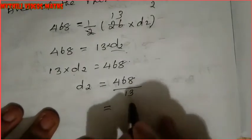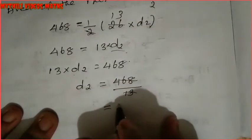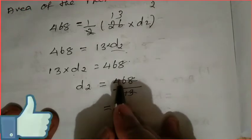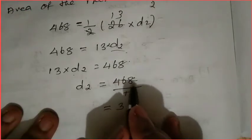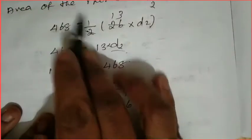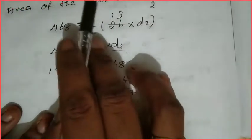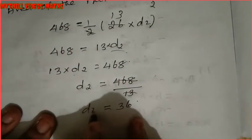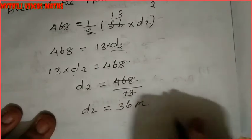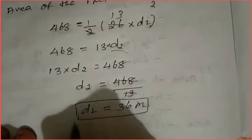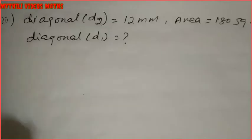We want only d2, so d2 = 468 ÷ 13. When we move 13 from the left side, it becomes division. Cancelling: 3 thirteens are 39, so we get 36. Therefore, diagonal d2 = 36 meters.